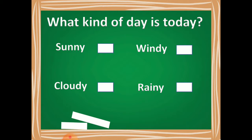Before starting, let us do a small exercise which is there in your textbook. I request you all to open page number 69 and see the first question there. That is: what kind of day is today? Is it sunny or windy or cloudy or rainy? Observe today's climate and tick the correct option. After doing this you need to send me the picture of the same.